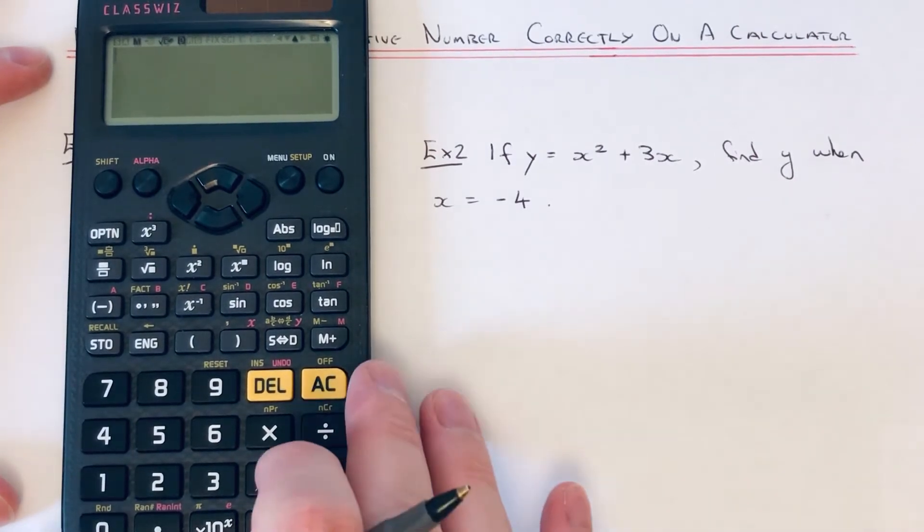If y equals x squared plus 3x, find y when x equals minus 4. A lot of people go wrong when they're drawing out a quadratic or cubic graph when they put the negative numbers in.